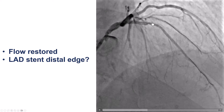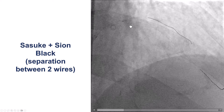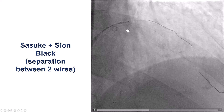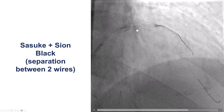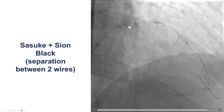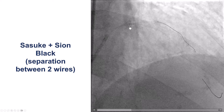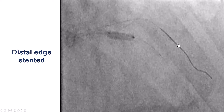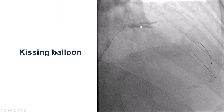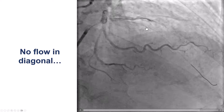Now we have better flow in the diagonal branch. We still have the issue in the LAD stent. We once again used the Sasuke to advance a guidewire into the side branch, and this time it was quite easy to advance a Sion Black wire into the diagonal branch. However, there is some distance between the second wire inserted and the first wire already in the diagonal branch — the significance of that will become apparent subsequently. There is some separation between the two wires. We stented the distal edge of the original stent, then did kissing balloon inflation. However, to our surprise, we had TIMI zero flow in the diagonal branch.